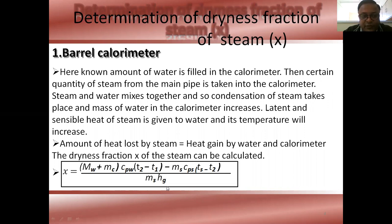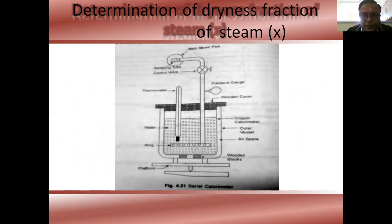This is the main formula of the barrel calorimeter, where mw is the mass of water, mc is the mass of the calorimeter, cpw is the specific heat of water, t2 is the final temperature, t1 is the initial temperature, ms is the mass of steam, cps is the specific heat of steam, ts is the saturation temperature of steam, and hg is the enthalpy of dry steam.